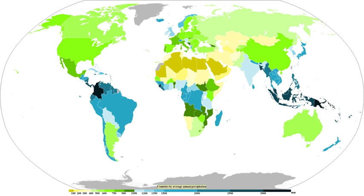Related topics include bioprecipitation, the concept of rain-making bacteria; mango showers, pre-monsoon showers in the Indian states of Karnataka and Kerala that help in the ripening of mangoes; sunshower, an unusual meteorological phenomenon in which rain falls while the sun is shining; and wintry showers, an informal meteorological term for various mixtures of rain, freezing rain, sleet and snow.